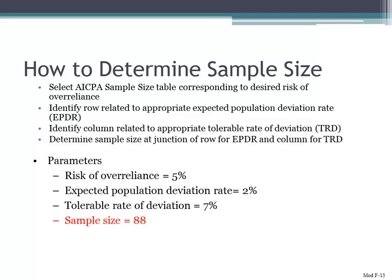For example, if you have the risk of overreliance of 5%, you would look at table F6. And if your expected population deviation rate is 2% — that's the first column — and the tolerable rate of deviation is 7% — that's across the columns — then your sample size is going to be 88. Your population deviation rate is 2%, your tolerable rate of deviation is 7%.